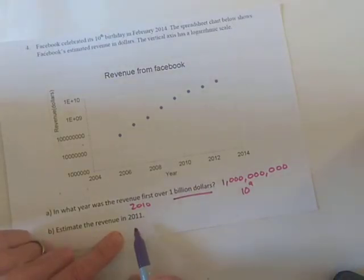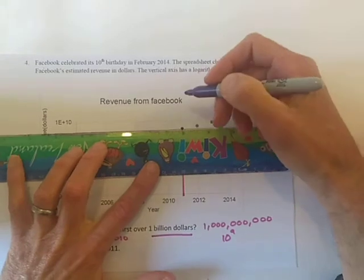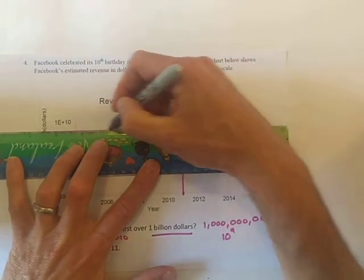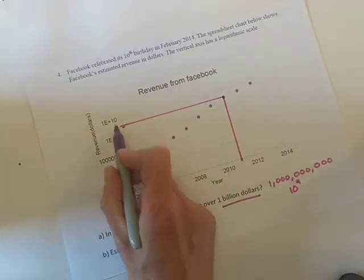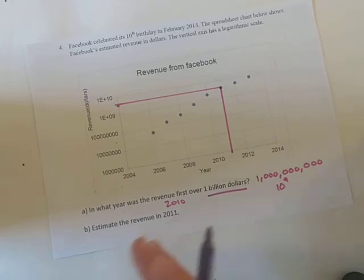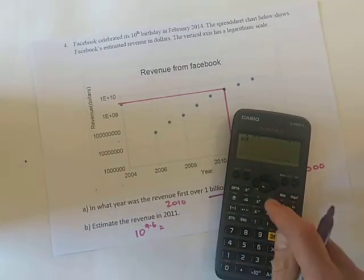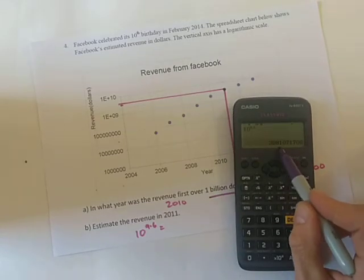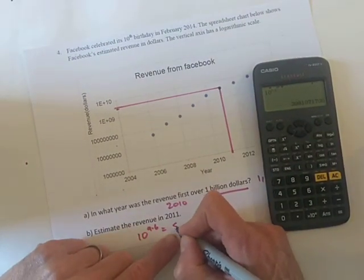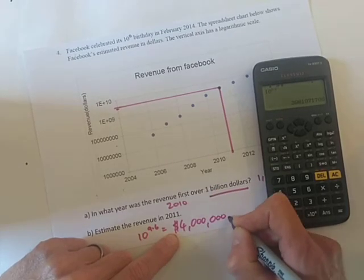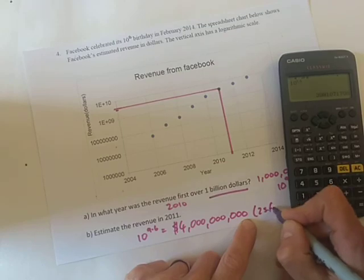We then need to estimate the revenue in 2011. Drawing that in carefully, we can see it's a bit over halfway between 10 to the power of 9 and 10 to the power of 10. If it were exactly halfway it would be 10 to the power of 9.5, but a bit more than that — I'm going to go with 10 to the power of 9.6, which gives us 4 billion in 2011, rounded to two significant figures.